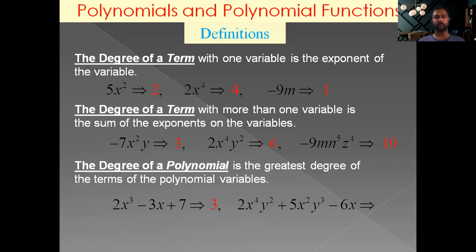Consider a polynomial in two variables: 2x to the power 4 y square plus 5x square y cube minus 6x. The degrees of each term are 6, 5, and 1 respectively. Therefore the degree of the polynomial is the highest, which is 6.